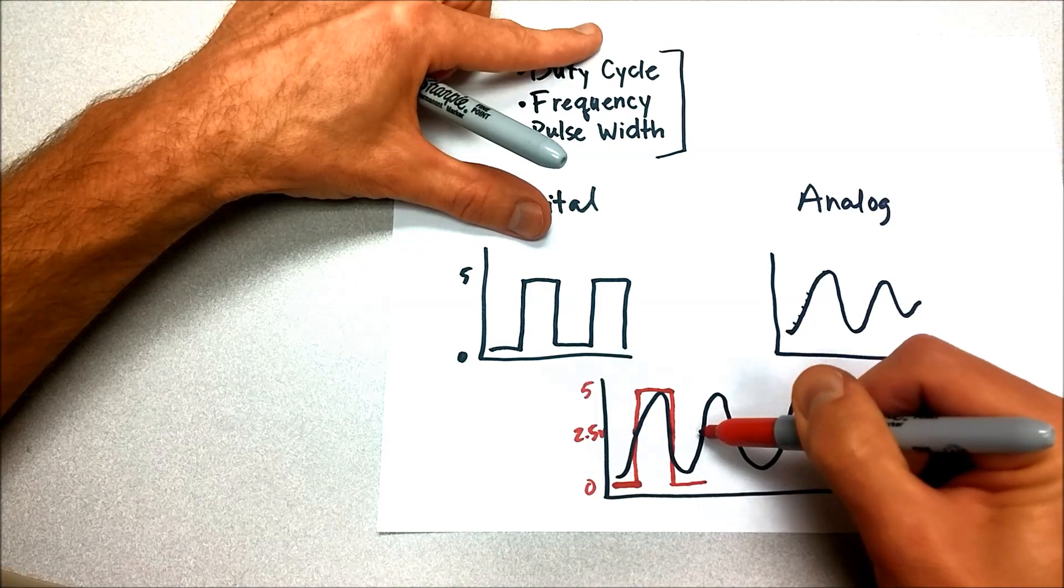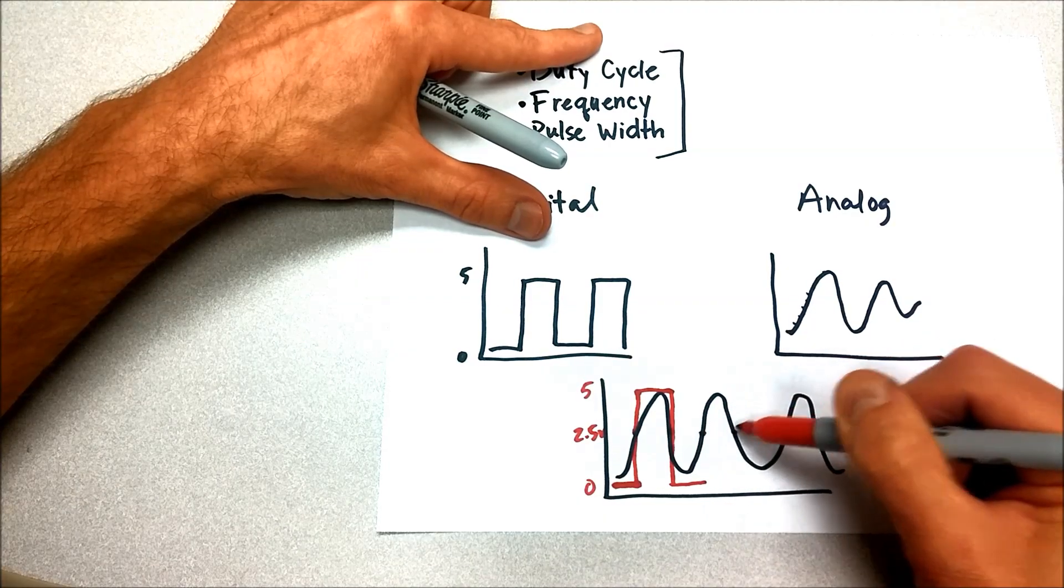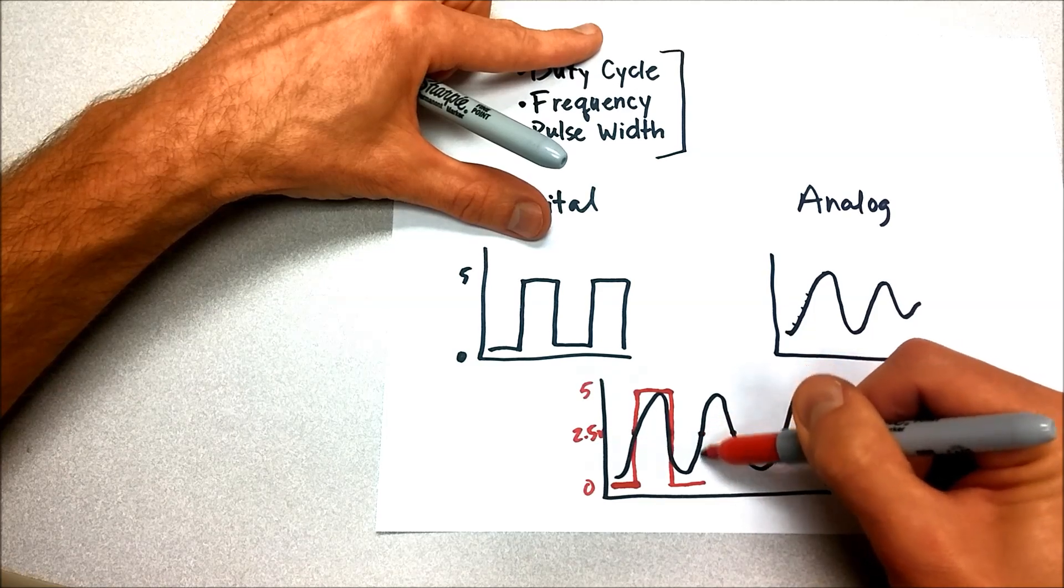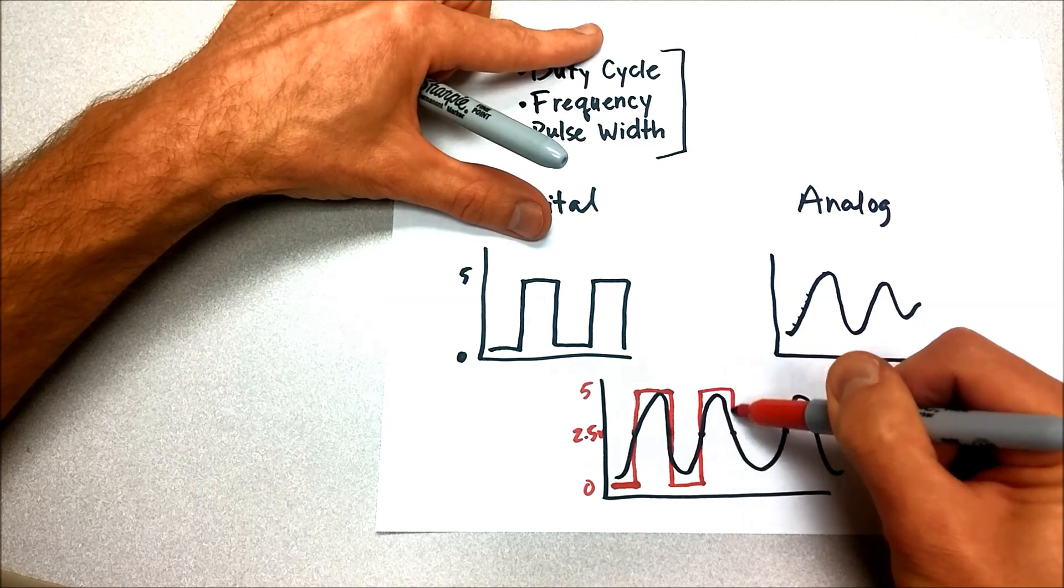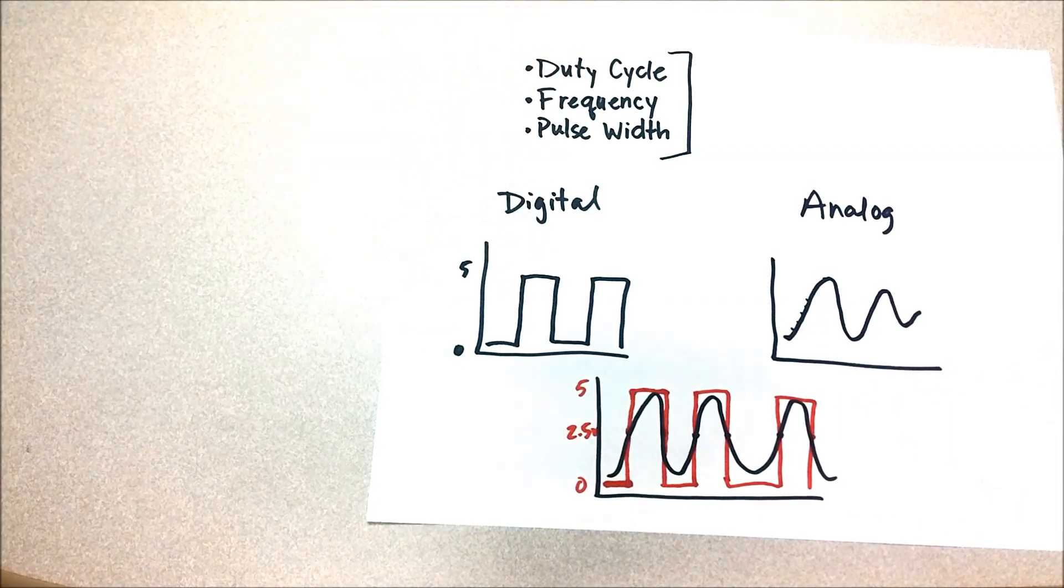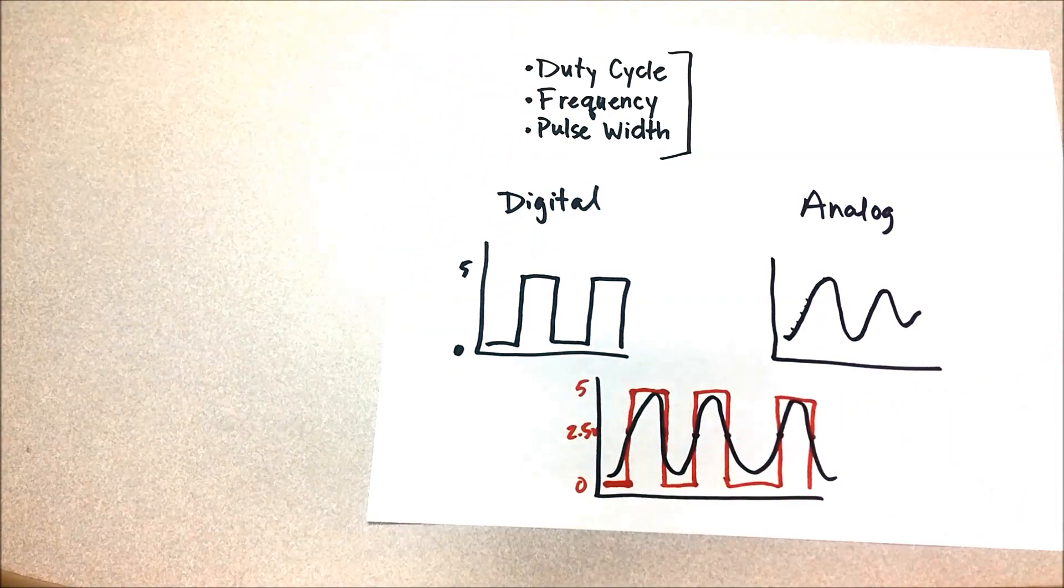And it stays high until it drops past the two and a half volt level again. And that continues. Every time it crosses that 2.5 volt level, if it's above 2.5 volts, it's considered on or high. If it's below, it's off. In a very basic way, that's how an analog signal is converted into a digital signal that can be used.